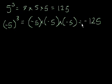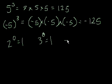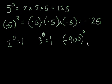One principle of exponents that might not seem completely intuitive at first is when you raise something to the 0 power. It turns out that anything to the 0th power is equal to 1. So 2 to the 0 power is 1, 3 to the 0 power is 1, and negative 900 to the 0 power is equal to 1. Let me give you a little bit of intuition for why that is the case.